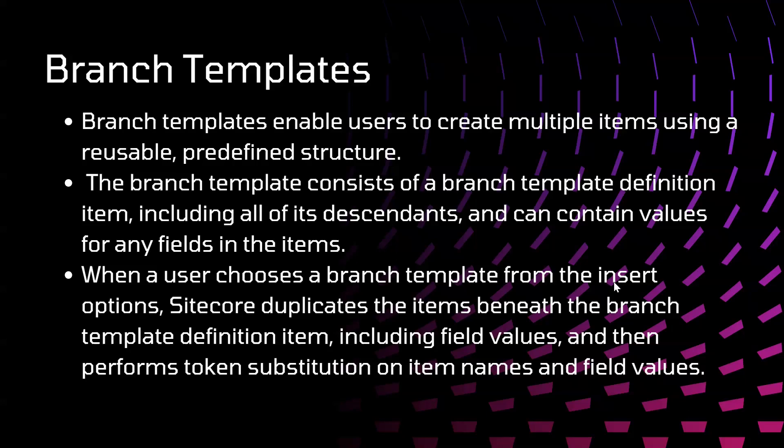When a user chooses a branch template from insert options, Sitecore duplicates the item beneath the branch template definition item, including field values, and then performs token substitution on item names and field values. If we have specified any tokens in our branch template for any items, those will also get substituted during creation of the branch template item.